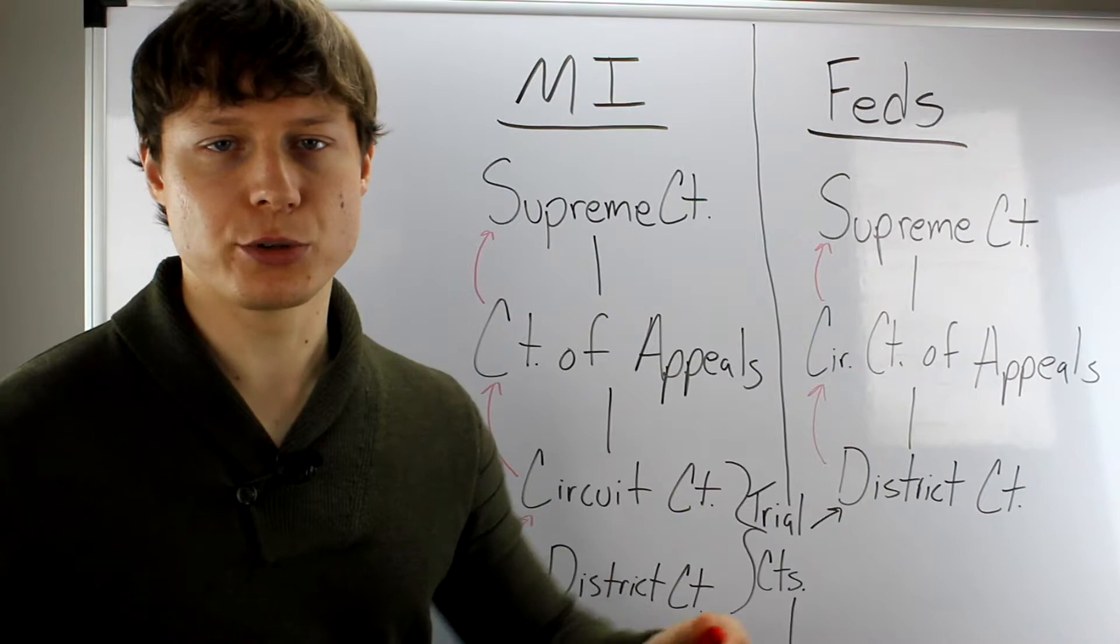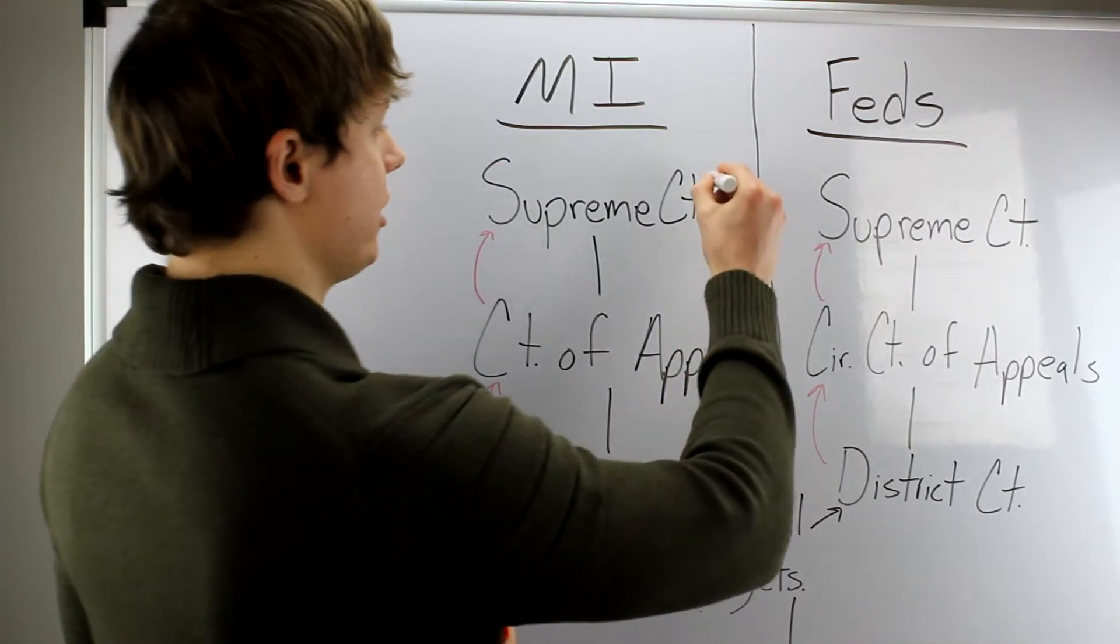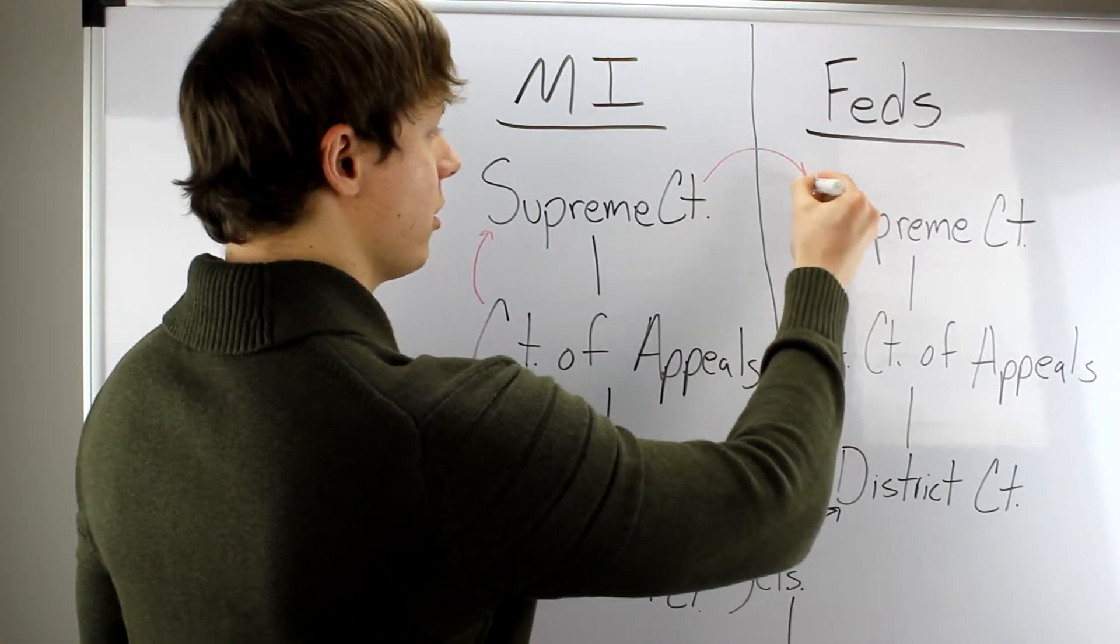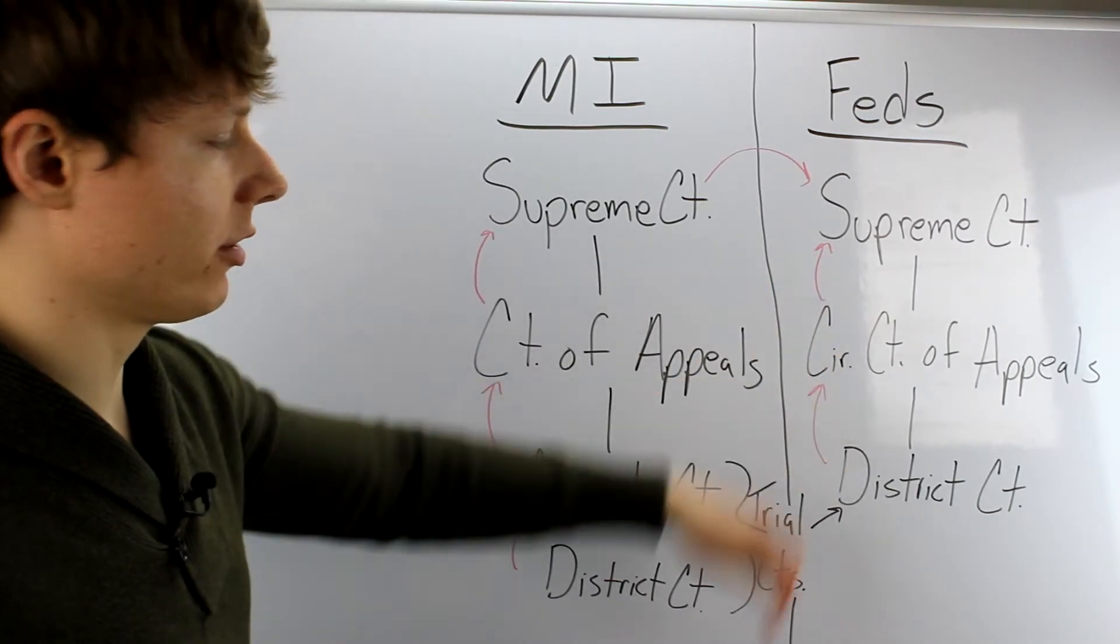You're going to go directly to the Supreme Court in Washington, D.C. So you go from here right over. You'd bump. You would skip these two tiers right there.